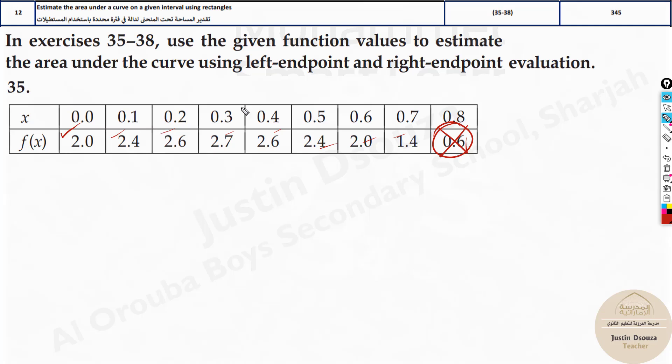Only these are added and multiplied by the interval because left endpoint means we start with these only and the rightmost value is not used. So the formula is very simple: summation of f of x into delta x.